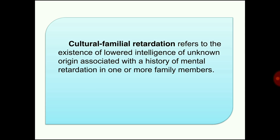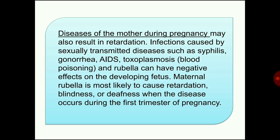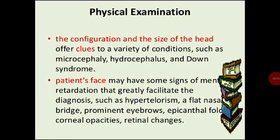Cultural-familial retardation refers to lowered intelligence of unknown origin associated with a history of mental retardation in one or more family members. Diseases of the mother during pregnancy may also cause retardation. Infections from sexually transmitted diseases such as syphilis, gonorrhea, AIDS, toxoplasmosis, blood poisoning, and rubella can negatively affect the developing fetus. Maternal rubella is most likely to cause retardation, blindness, or deafness when occurring during the first trimester of pregnancy.